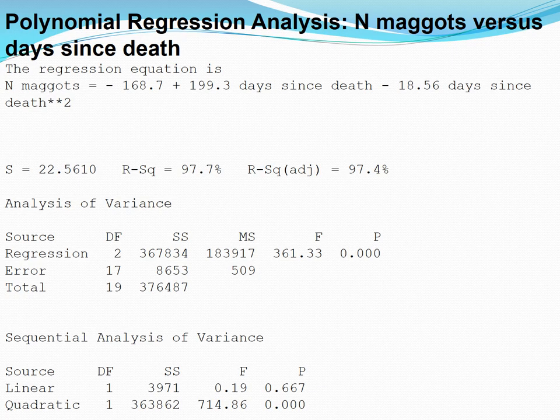What we need to do is a quadratic regression. Look how the regression equation has changed: y equals a plus bx minus b₂x². We've now got a quadratic term put into that regression as well. The r-squared has absolutely flown up — 97.7% of the variability in the number of maggots is now described by variability in days since death.